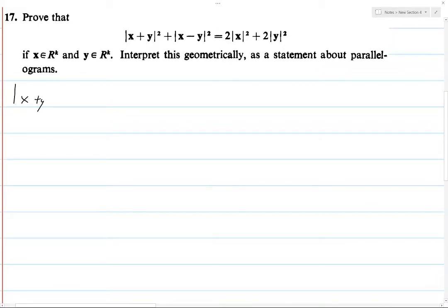So, |x + y|² + |x - y|². Okay, so what is this? This is the norm, the sum from 1 to k of (x_i + y_i)². There would be a square root over this entire sum, but we have a square there, so we don't need it. And then we add the sum from 1 to k of (x_i - y_i)². That's just the definition.